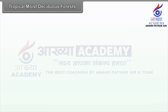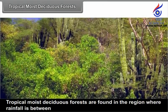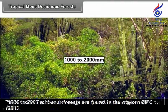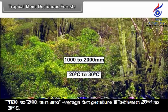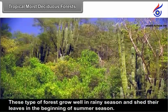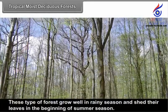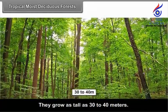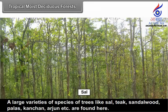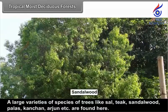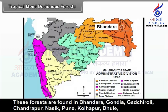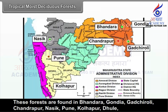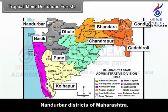Tropical moist deciduous forests are found in regions where rainfall is between 1000 to 2000 mm and the average temperature is between 20 to 30 degrees Celsius. These forests grow well in the rainy season and shed their leaves at the beginning of summer. They grow as tall as 30 to 40 meters. A large variety of species like sal, teak, sandalwood, paras, kanchan, and arjun are found here. These forests are found in Bhandara, Gondiya, Gadchiroli, Chandrapur, Nashik, Pune, Kolhapur, Dhule, and Nandurbar districts of Maharashtra.